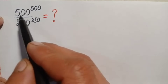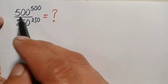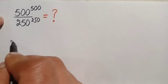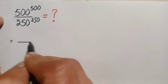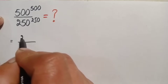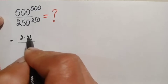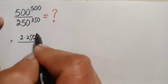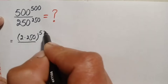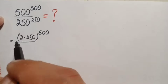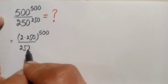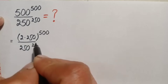On the first method, we will factorize the number 500. So therefore we can write this number as 500 can be written as 2 times 250 raised to the power 500, divided by 250 raised to the power 250.